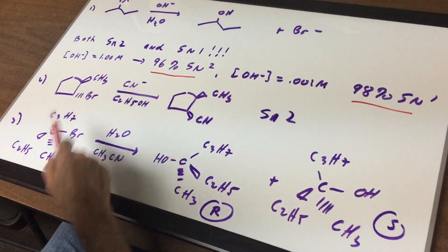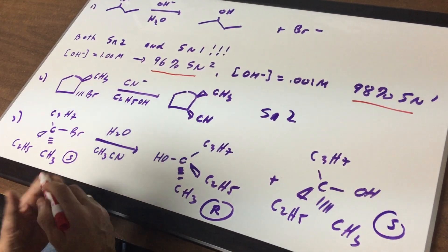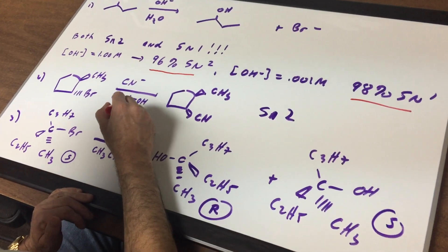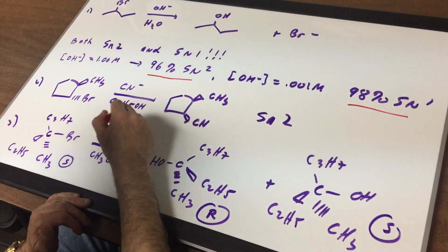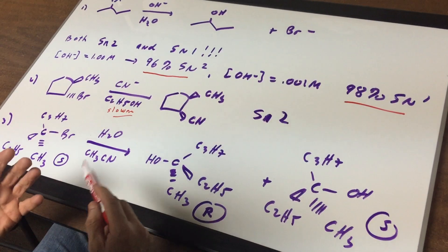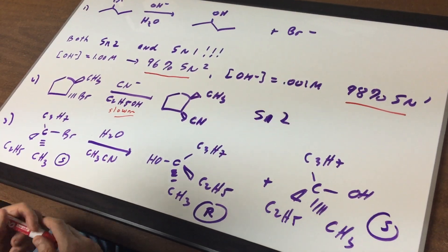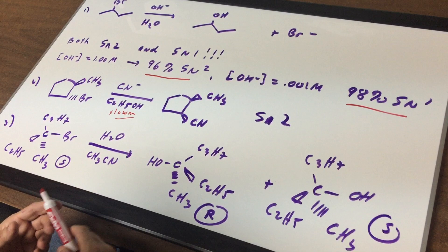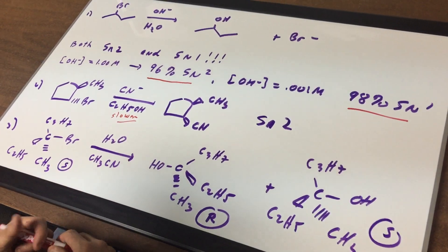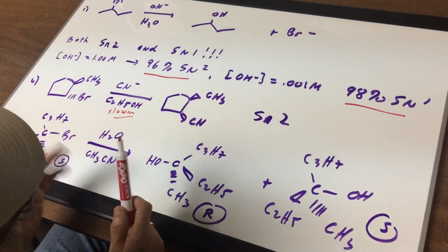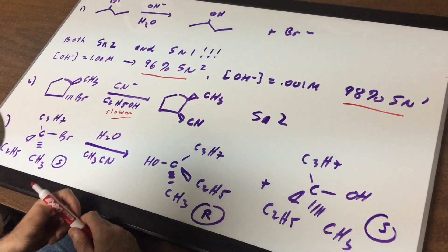We see cyanide and we have an alcohol as the solvent. This reaction would be slower. Why? The minute you see cyanide, you think SN2. SN2 is favored by polar aprotic solvents. This solvent is polar protic. Usually if it's polar protic, we do SN1.